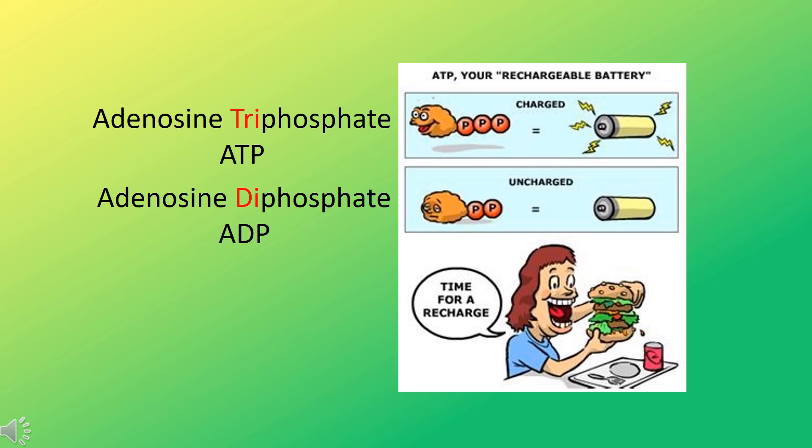This state is considered low energy. In order for the cell to create more energy, the ADP must be recycled. You can think of ATP like a rechargeable battery. ATP is like a full battery with lots of energy available, while ADP is similar to a dead battery needing to be recharged.